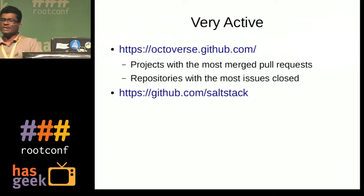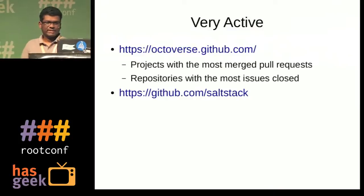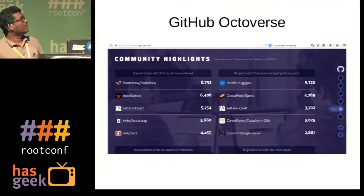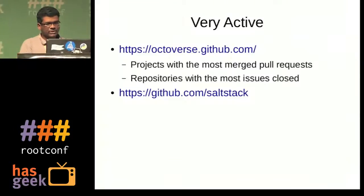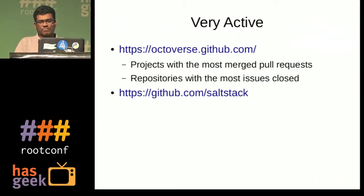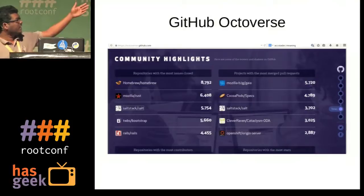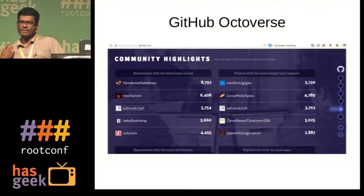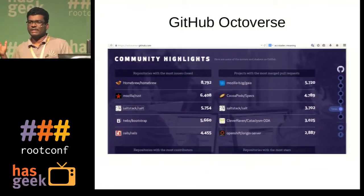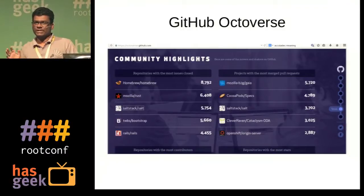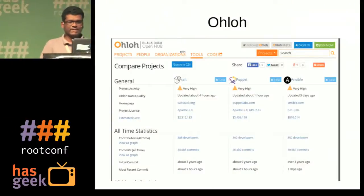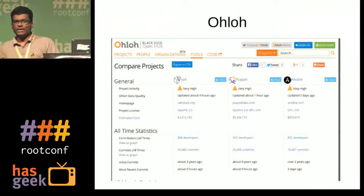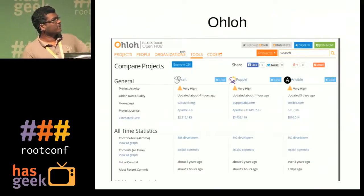It's a very active development community. If you check octoverse.github.com, you can see the community highlights. Looking at most merged pull requests and repositories with most issues closed, SaltStack comes in as the third largest project on GitHub. In 2012, it was also the eighth most active project on GitHub. I made some comparison using orglog, a statistics provider where you can compare SaltStack with Puppet and Ansible.